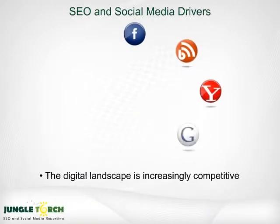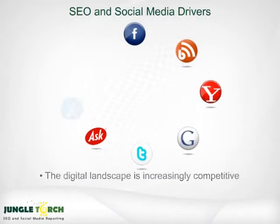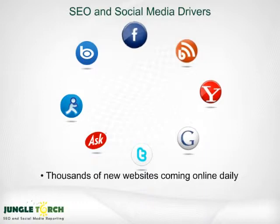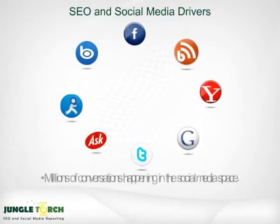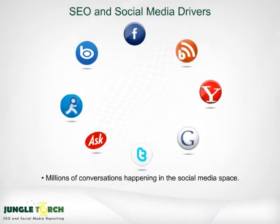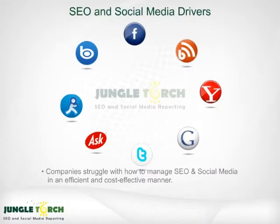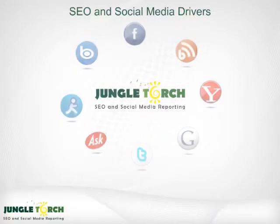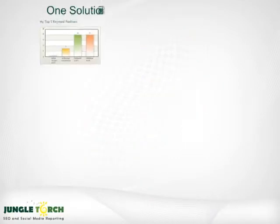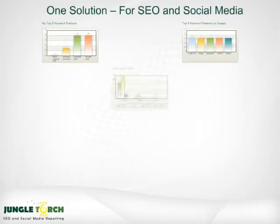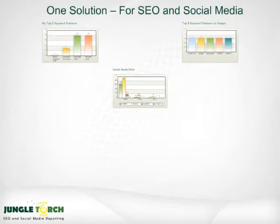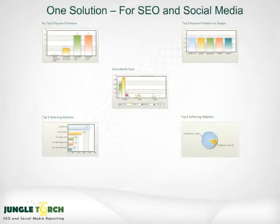Digital marketing is increasingly competitive, with more websites coming online daily and millions of social media conversations happening 24-7. How do you track SEO and social media efficiently, effectively, and at low cost? The answer is Jungle Torch. Jungle Torch is purpose-built to track the most important pieces of SEO and social media.